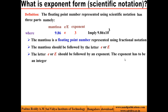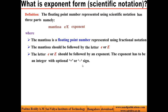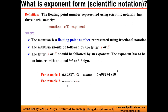The exponent has to be an integer with an optional plus or minus sign. For example, the exponent can be unsigned like 3, or +3, or -3. For example, 6.698274 E2 means 6.698274 × 10².